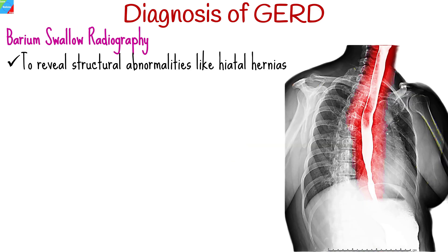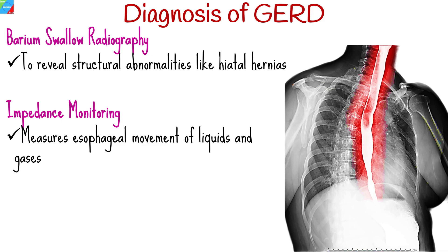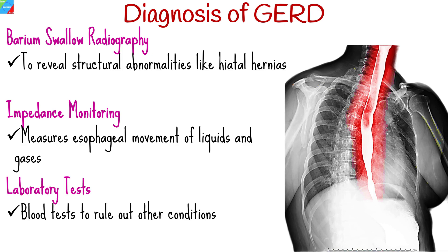Barium swallow radiography involves ingesting contrast material followed by X-rays to reveal structural abnormalities like hiatal hernias. Impedance monitoring measures esophageal movement of liquids and gases to identify non-acid reflux episodes. Blood tests are used to rule out other conditions, assessing markers for inflammation or esophageal damage.